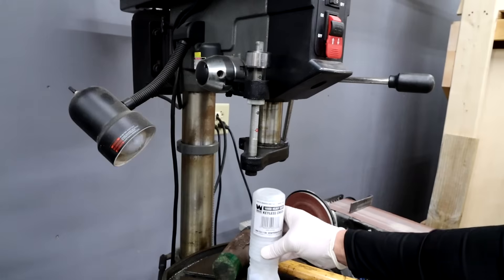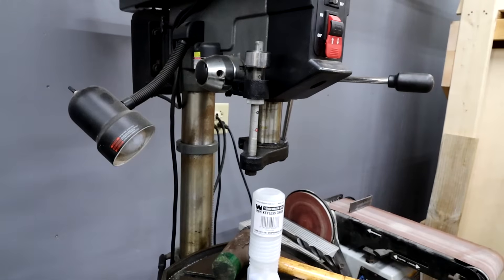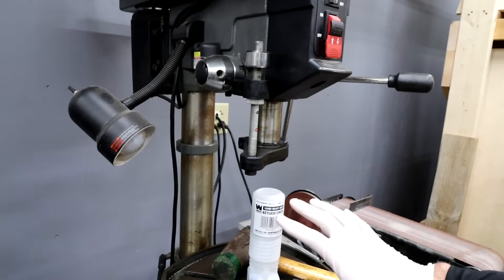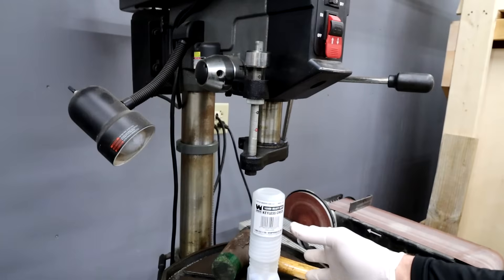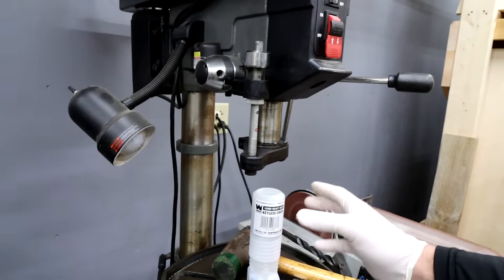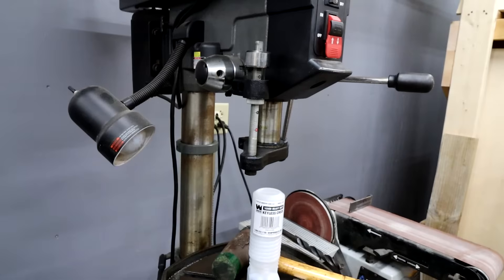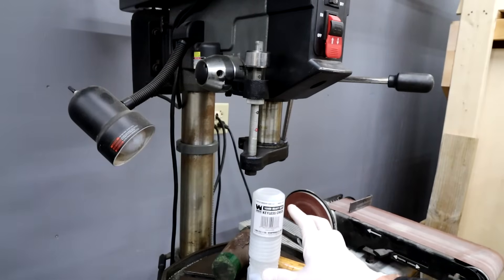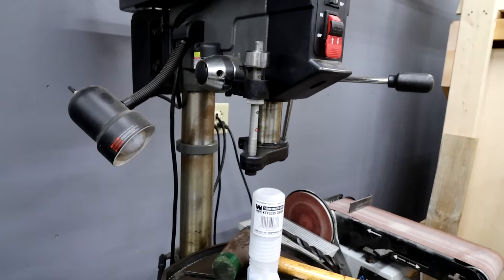So what I have here is I have a Wynn keyless chuck. And I have no idea if I'm going to like this or not. It's not a high dollar chuck, but I thought I would try something keyless just to see if I liked it. And one thing I did like about is this goes up to five eighths, whereas my original chuck just went to half inch.